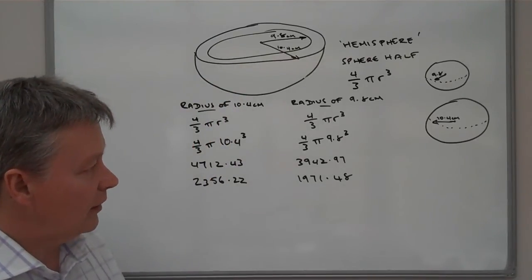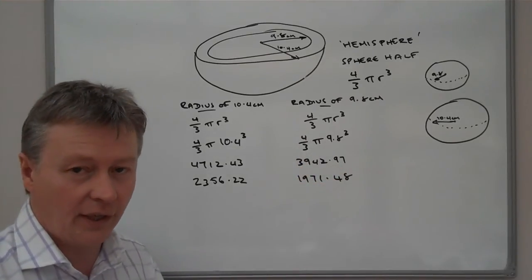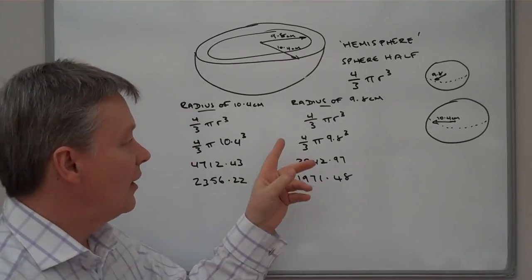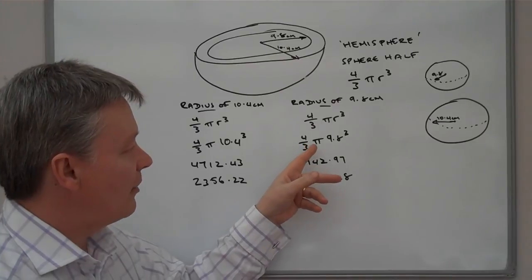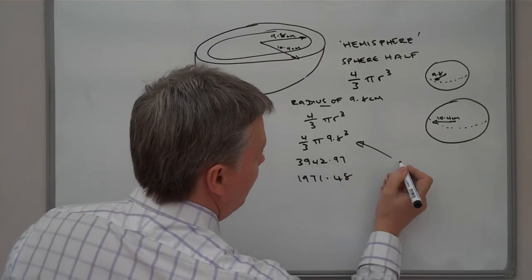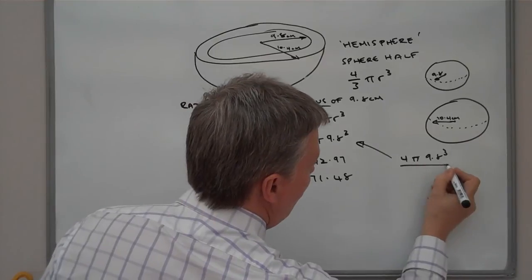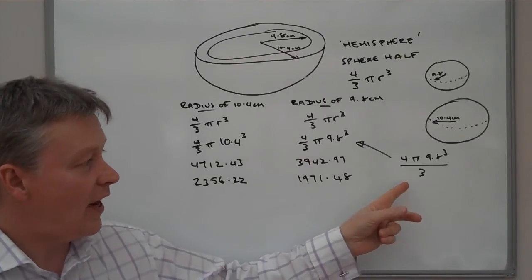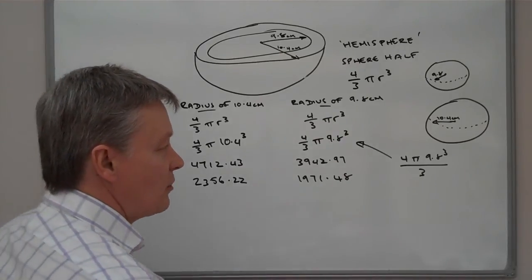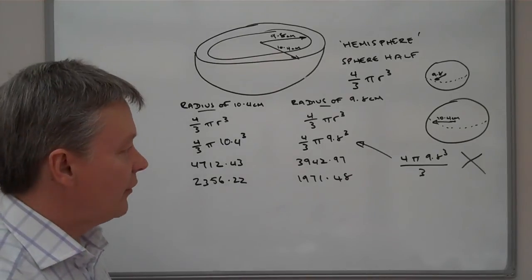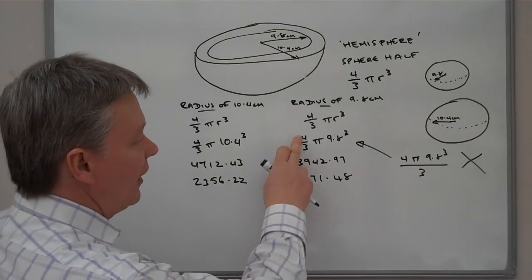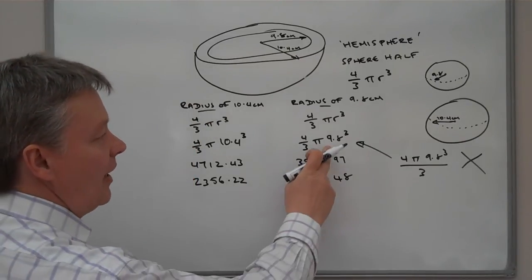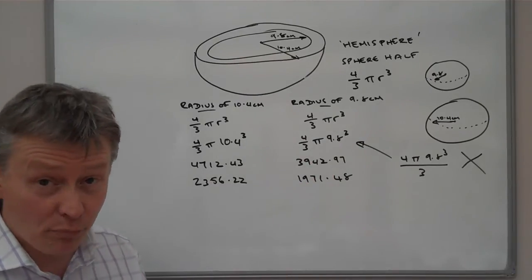However, just while I think about it, this is an important thing. When you put it into a calculator, you've got to be very careful with these kind of calculations. Because this calculation is not 4 over 3 times pi over 3. So this is not 4 pi 9.8 cubed all divided by 3. So you've got to be very careful in a calculator that you don't give the calculator the impression that that's what you're trying to calculate. It's not. So I'm just going to put a big cross against that. Because when you put this kind of calculation into the calculator, the important thing is to appreciate this is 4 thirds of pi, or 4 thirds times pi and then times that by 9.8 cubed.